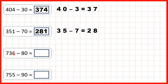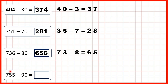Now 736 minus 80. Our ones digit will stay the same, so we work out 73 minus 8, which is 65. So we write 65 and keep our ones digit the same to get 656. And finally, 755 minus 90. We know our ones digit stays the same, so 75 minus 9 is 66, and then keeping the ones digit gives us our answer, 665.